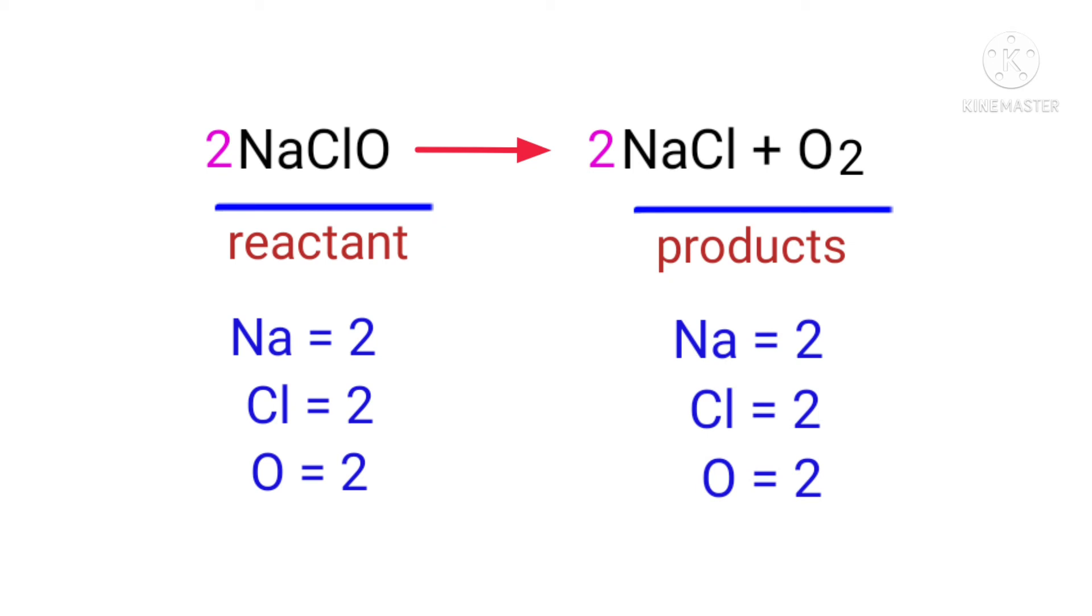The equation is now balanced. There are two sodium atoms, two chlorine atoms, and two oxygen atoms on both sides.